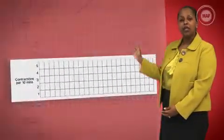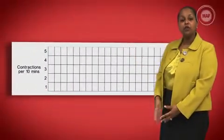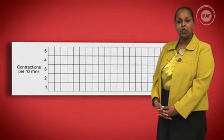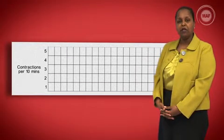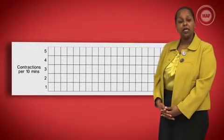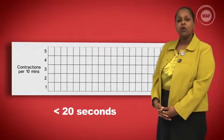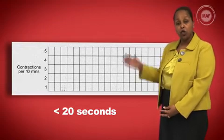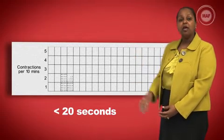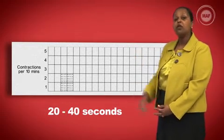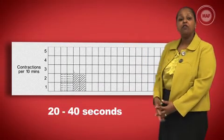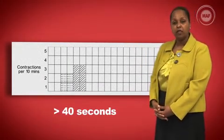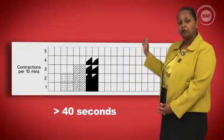Record the contractions every half an hour. You do this by counting the number of contractions in a 10-minute time period and recording their duration in seconds. When contractions last less than 20 seconds, you may use dots to indicate this. And between 20 and 40 seconds, you may use dashes. If contractions last more than 40 seconds, you can use a blacked-out box.